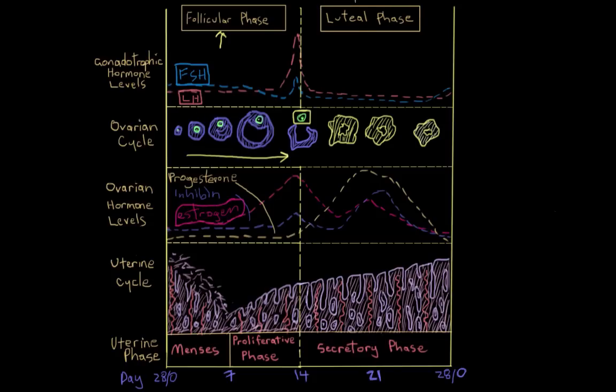So the second half after ovulation is called the luteal phase. And it's called the luteal phase because it's about the development of this yellow structure here called the corpus luteum. So let's talk about it.